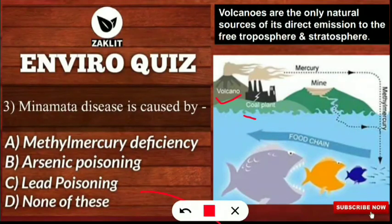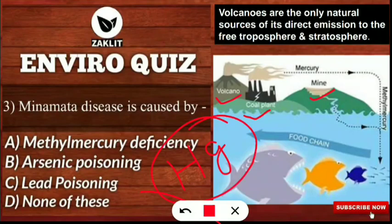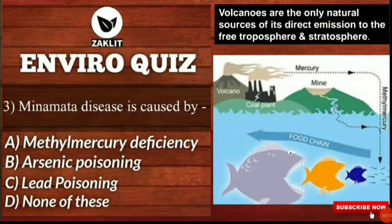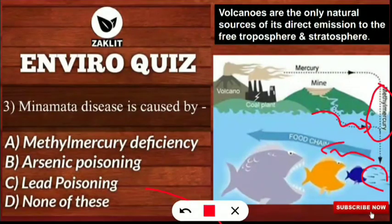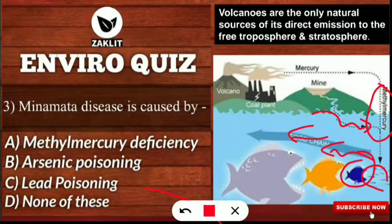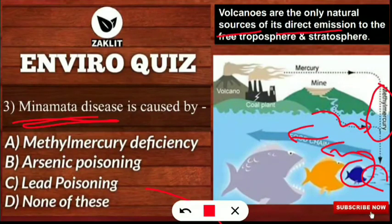Mercury (Hg) comes from volcanoes, coal plants, and mining. When mercury reacts with a methyl group, it forms methyl mercury, which is carried by water bodies. Small fish ingest this methyl mercury, and as it moves up the food chain when these fish are eaten by humans, the concentration increases due to biomagnification, causing Minamata disease in animals and humans.